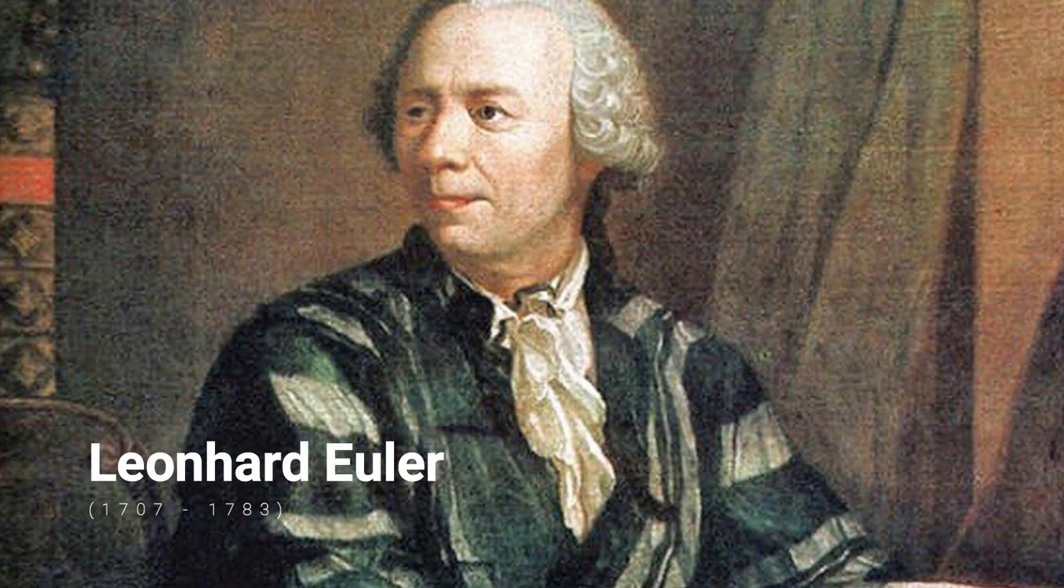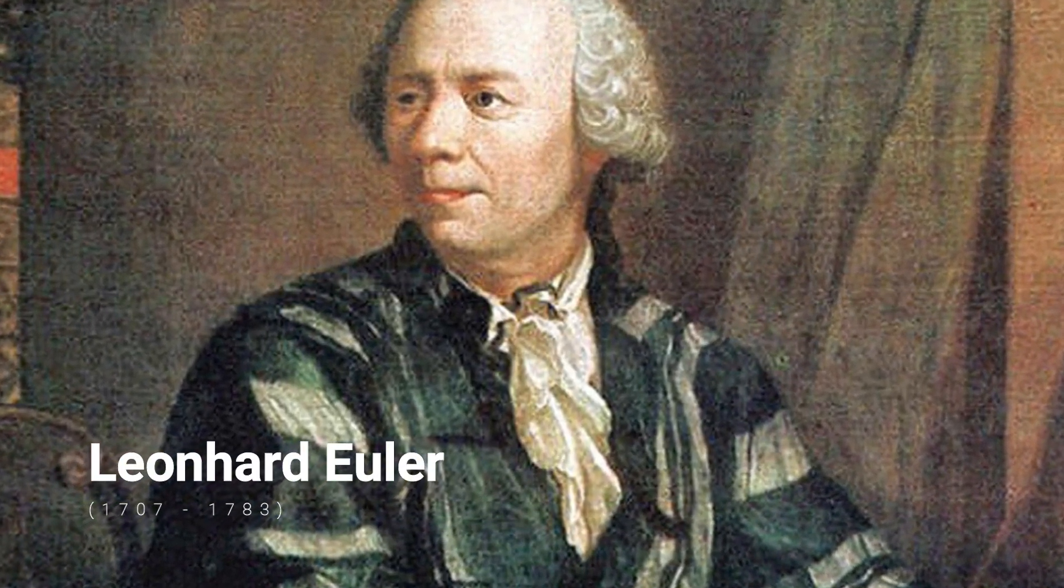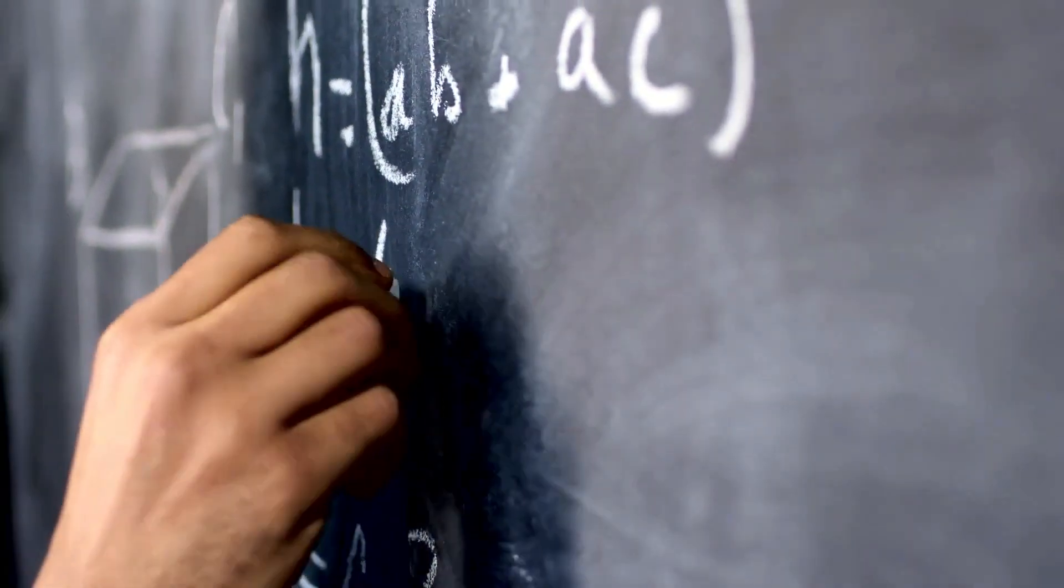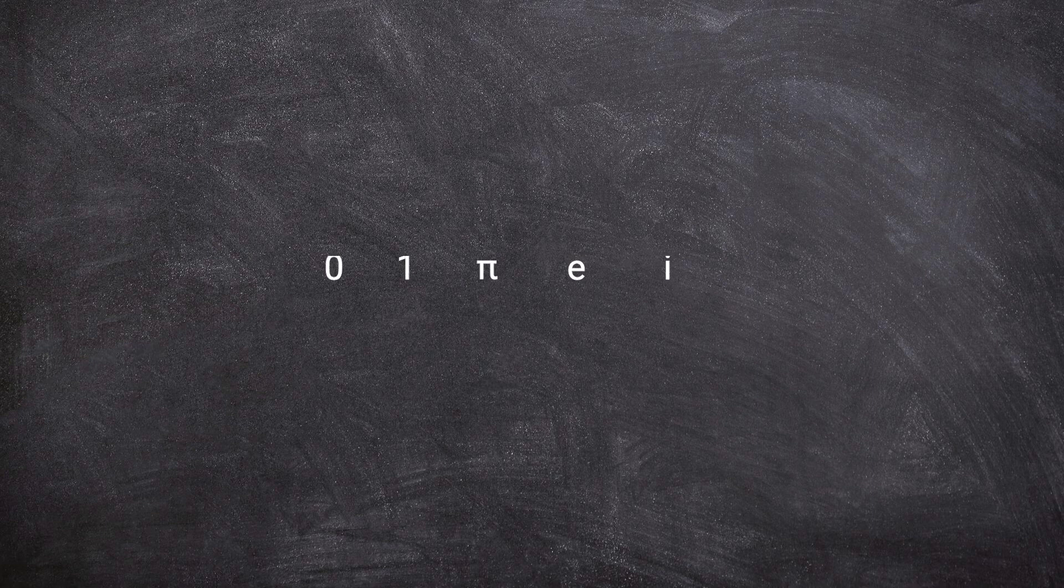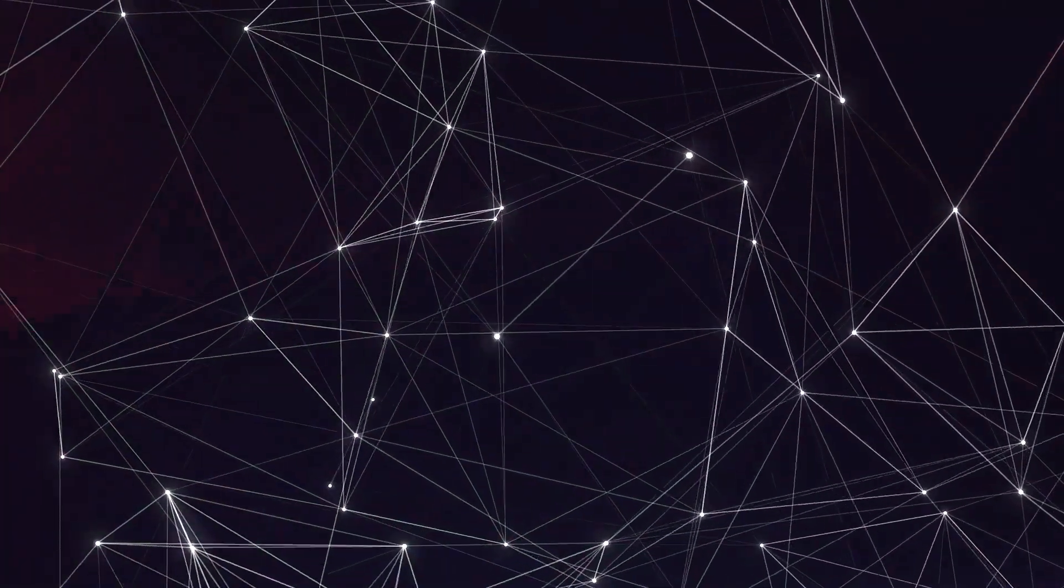Leonard Euler, one of the great mathematicians of human history, found one equation which summarized the fundamental constants of math: 1 plus e to the i pi equals zero. People call that the God equation of mathematics.